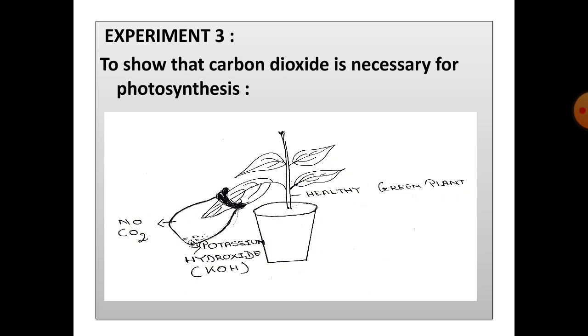Next, to show that carbon dioxide is necessary for photosynthesis. We will take a plant with de-starched leaves. We will insert one of its leaves into a conical flask containing potassium hydroxide. We will leave the plant in sunlight. After a few hours, we will test this and any other leaf of this plant. The leaf which was exposed to atmospheric air becomes blue-black. The leaf which was inside the bottle containing potassium hydroxide does not become blue-black because potassium hydroxide absorbs carbon dioxide. This shows that carbon dioxide is necessary for photosynthesis.